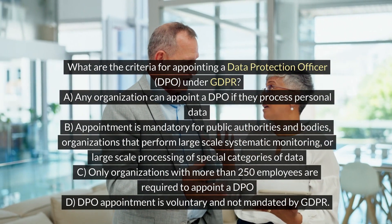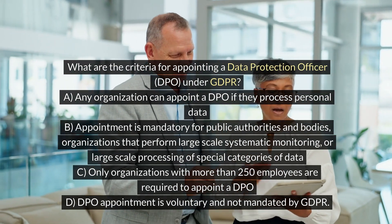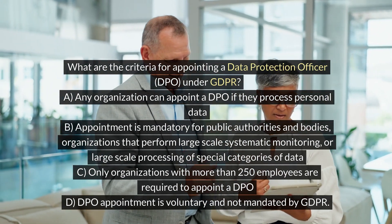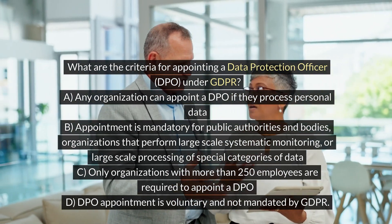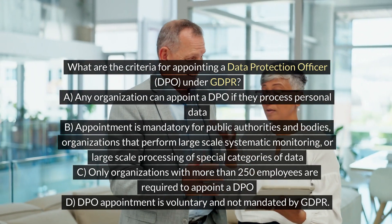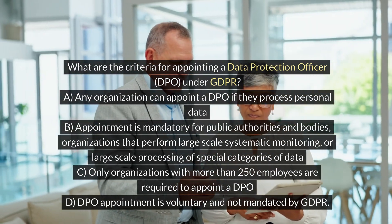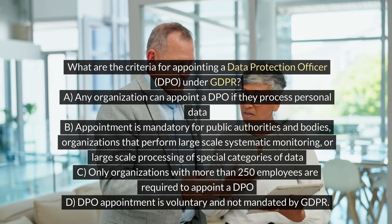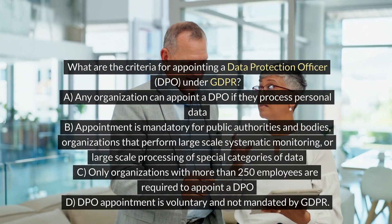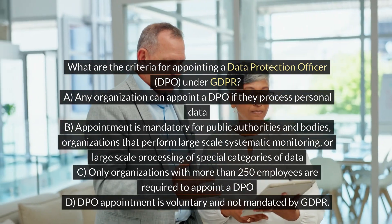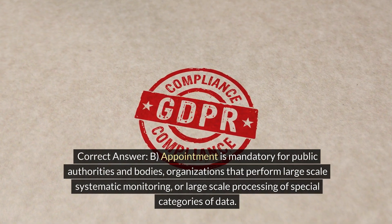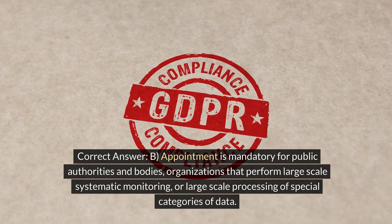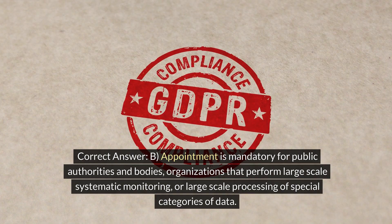What are the criteria for appointing a data protection officer (DPO) under GDPR? A. Any organization can appoint a DPO if they process personal data. B. Appointment is mandatory for public authorities and bodies, organizations that perform large-scale systematic monitoring, or large-scale processing of special categories of data. C. Only organizations with more than 250 employees are required to appoint a DPO. D. DPO appointment is voluntary and not mandated by GDPR. Correct answer: B. Appointment is mandatory for public authorities and bodies, organizations that perform large-scale systematic monitoring, or large-scale processing of special categories of data.